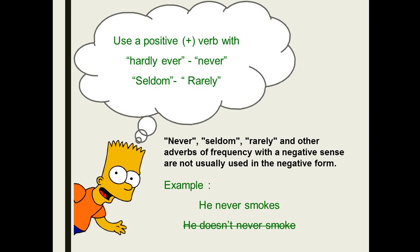Like 'never,' 'seldom,' 'rarely,' and other adverbs of frequency with a negative sense are not usually used in the negative form. For example, 'he never smokes.' I can never say 'he doesn't never smoke.' You can say either 'he never smokes' — where 'never' comes before the main verb — or 'he doesn't smoke.'